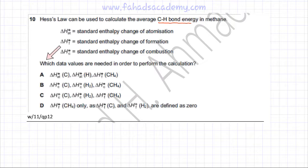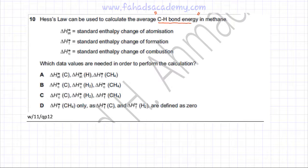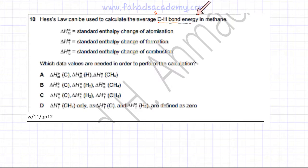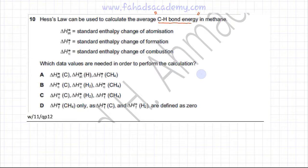The question asks which data values are needed to perform the calculation. We are trying to find the CH bond energy — specifically the bond energy of the CH bond in methane. The options deal with carbon, hydrogen, and CH₄, so we need to think of a reaction whose enthalpy change is equal to the CH bond energy.